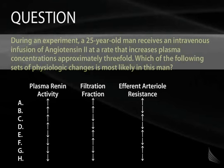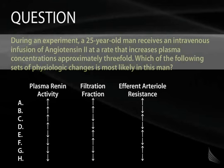If you're increasing angiotensin 2, you're going to increase aldosterone. If you increase aldosterone, the feedback will suppress renin — that is the negative feedback. The other thing to understand is the physiological action of angiotensin 2: it results in an increase in efferent arteriolar resistance, which increases the filtration fraction. Hence the correct answer is option E, which combines suppression of renin, increase in filtration fraction, and increase in efferent arteriolar resistance.